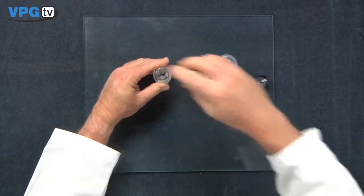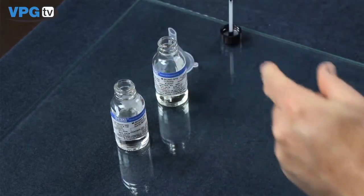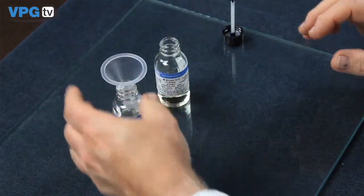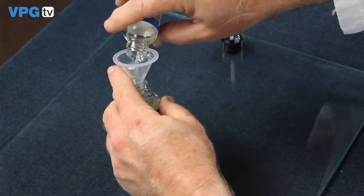Uncap the resin and curing agent, discarding the shipping caps. Do not attempt to make partial batches. Be sure to use all of the pre-measured materials. Pour the curing agent into the resin bottle.